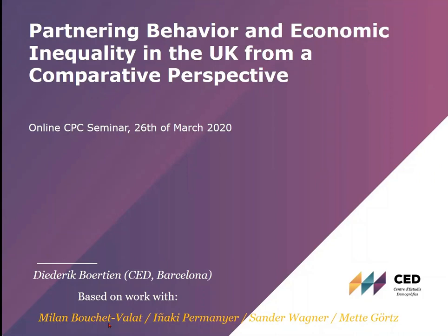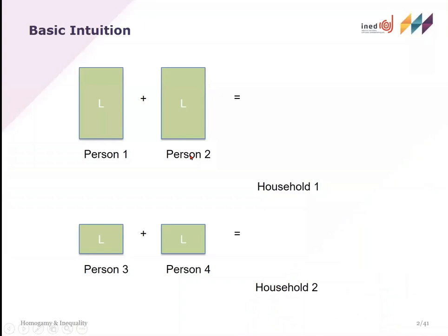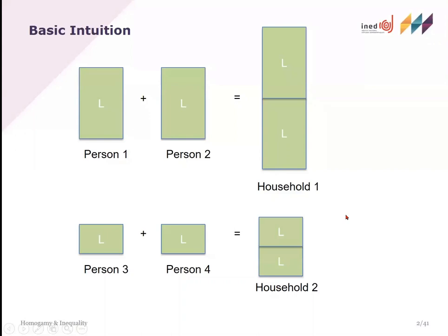The different parts of this presentation come from various works done with co-authors Milan Boushevala, Iñaki Permanier, Sander Wagner, and Mette Gertz. So let me start with the basic intuition behind these ideas. If we imagine four persons in a society, the size of each of these bars represents their personal income — we have two rich persons and two poor persons.